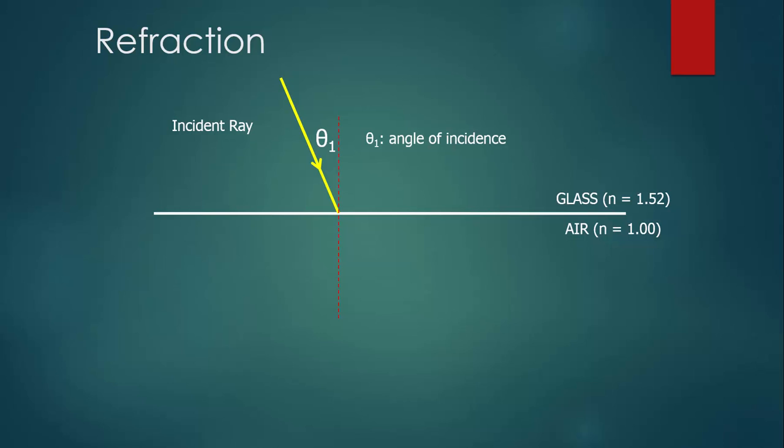And now, when the light travels from glass into air, we know it's going to speed up. And when it speeds up, the refracted ray bends away from the normal. In this case, the angle of refraction, theta 2, is bigger than the angle of incidence.